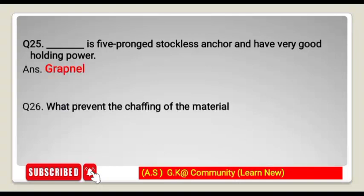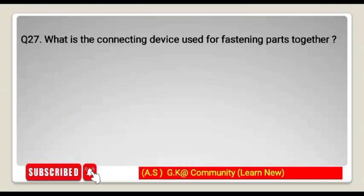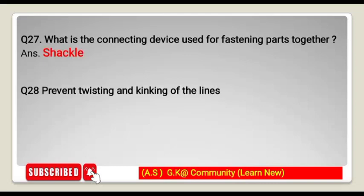What prevents the chafing of material? A thimble prevents chafing. What is the connecting device used for fastening parts together? A shackle. What device prevents twisting and kinking of lines? It is a swivel.